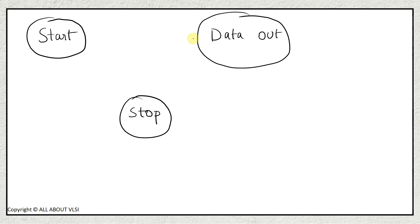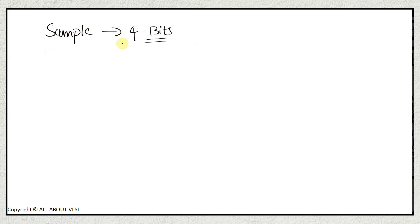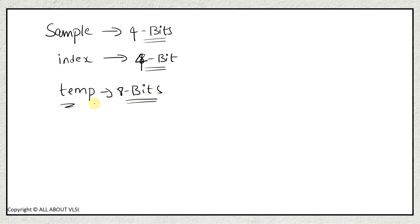Now let us discuss the transition conditions between states. In our code we are going to declare a signal known as 'sample', which is of four bits width. We also have a signal known as 'index', which is of four bits width, and one more signal 'stem' which is of eight bits width for storing the data which the transmitter has sent to us.